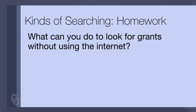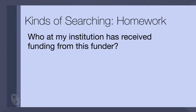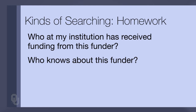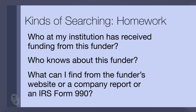There are also things you can do without the internet to search for grant resources. Find out who at your institution has received funding from a funder — who knows about this funder? Maybe somebody in your building or school system, or a professor friend, knows about a funding resource. What can you find from the funder's website, a company report, or an IRS Form 990? Those are questions to ask as you do your search.